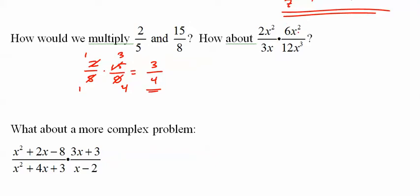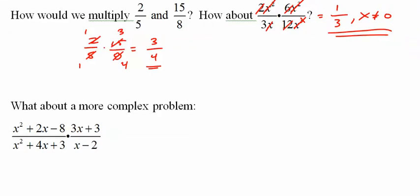Same thing up here. X squared, x and x, x squared. 2 and 6 and 12. I get 1 third. X cannot equal 0. I have a tendency after doing it long enough to forget that, the excluded value. But hopefully you won't.